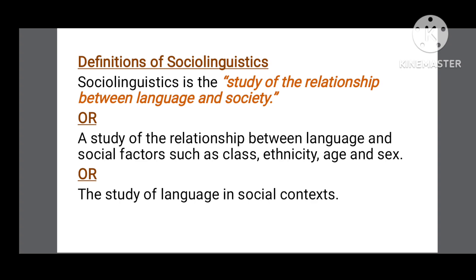The second definition of sociolinguistics is: Sociolinguistics is the study of the relationship between language and social factors such as class, ethnicity, age, and sex. People use different languages in a society which shows their class and ethnicity. Moreover, sociolinguistics also studies why people of different ages and different sexes use different languages at the same time.